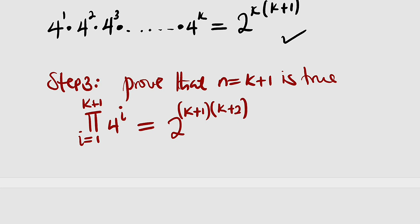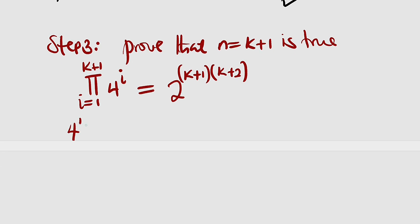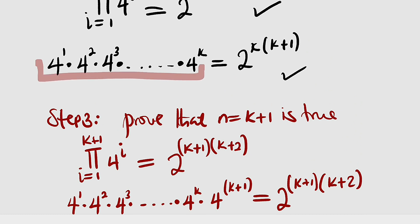We want to show that the left hand side will be exactly the same as the right hand side. Expanding the left hand side: 4 to the power of 1 multiplied by 4 to the power of 2, then 4 to the power of 3, continuing up to 4 to the power of k, then multiplied by the last term 4 to the power of k plus 1. We observe that from 4 to the power of 1 down to 4 to the power of k is exactly our inductive hypothesis, so we substitute it with 2 to the power of k multiplied by k plus 1.